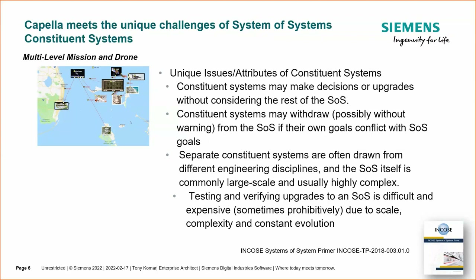One of the things discussed, which Capella can address, is that constituent systems make decisions or upgrades without considering the rest of the system of systems — they don't play well together. That's what makes it a system of systems as opposed to just a system of components. I'll use 'CS' to save myself from saying 'constituent' every time. The CS may withdraw from the whole system of systems without warning. The separate CS are often drawn from different engineering disciplines, making it more challenging. Testing and upgrading is very difficult because constituent systems can change without playing along with what the system needs.